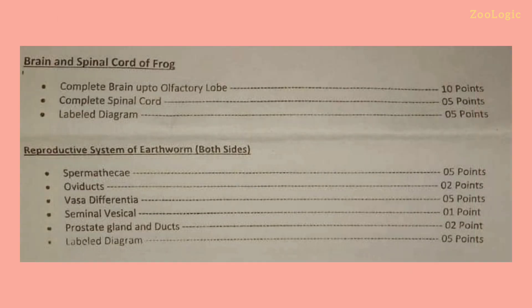If you are asked to dissect the brain and spinal cord of a frog, or the reproductive system of earthworm, you have to expose all parts clearly. For the brain and spinal cord, a complete brain up to the olfactory lobe and a complete spinal cord are required, displayed on a slide. For the reproductive system of earthworm, you must expose spermathecae, oviducts, vas deferentia, seminal vesicles, prostate gland and ducts, then draw a well-labeled diagram. Do not miss any exposed part during labeling.